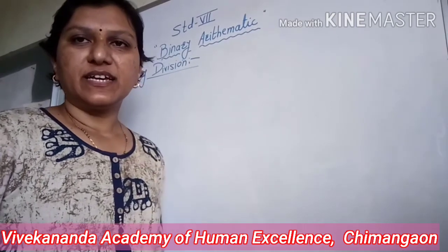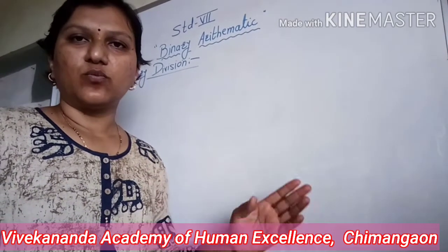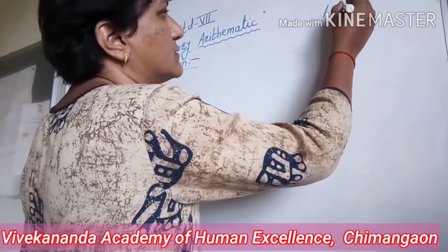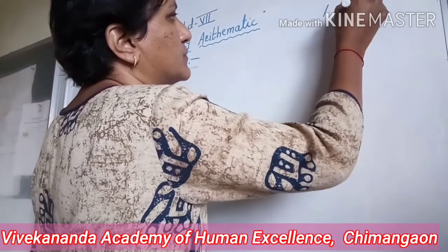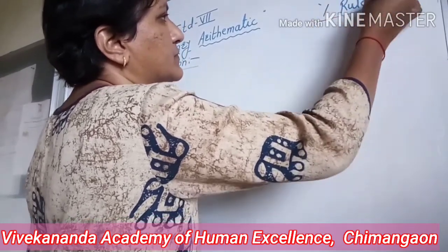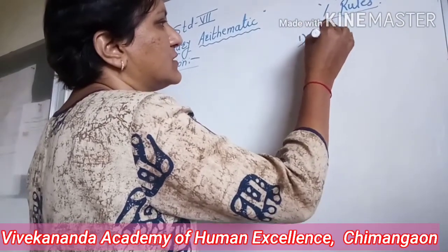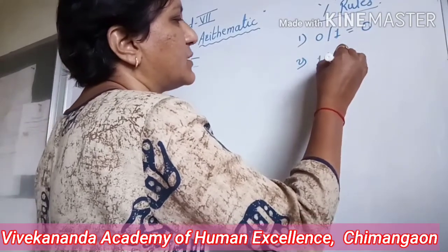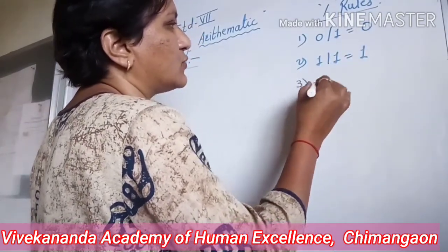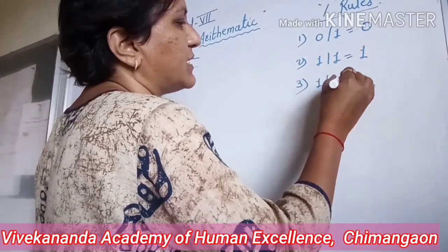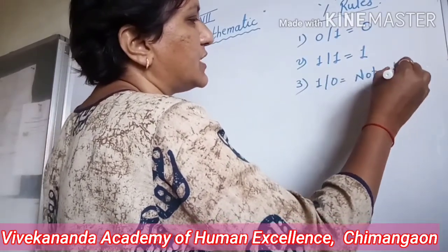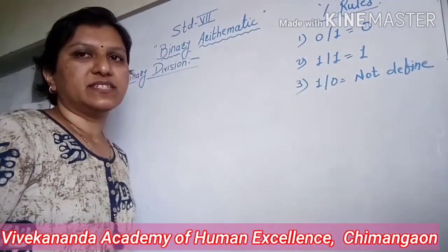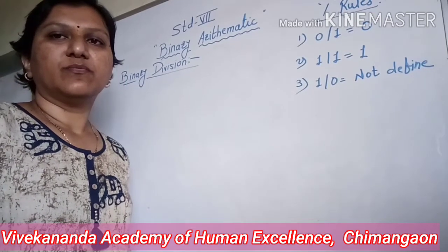Before starting the division examples, I am going to write down the rules on one side of the board. Division rules: first rule — 0 divided by 1 equals 0. Second rule — 1 divided by 1 equals 1. Third rule — 1 divided by 0 is not defined. Now let us start with our example of binary division.